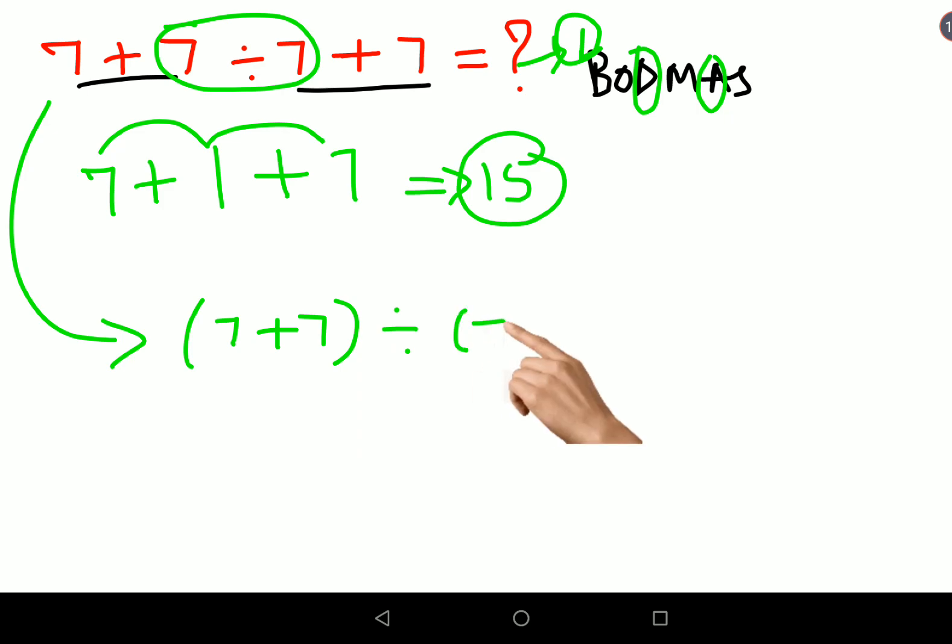Then again, according to BODMAS, we can say that first we'll do the brackets, so we'll get 14 divided by 14. Then in that case your answer should be 1.